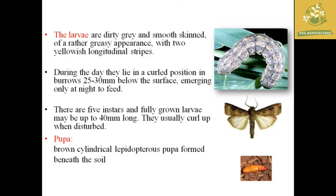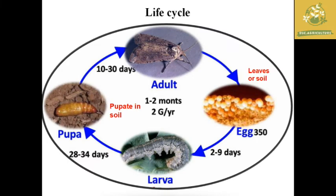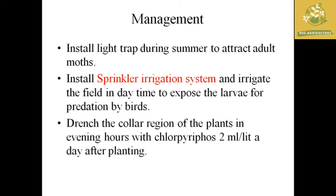The larva is dark beige and smoothly skinned with yellowish longitudinal stripes. The pupa is a lepidopterous, brown cylindrical pupa found beneath the soil. The adult is a heavily bodied moth with a sooty black appearance, and a wingspan of around 4.5 centimeters (45 millimeters). For management of cutworms: install light traps during summer to attract adult moths, use sprinkler irrigation during daylight to expose larvae to predators like birds, and drench the collar region of the plant in evening hours with Chlorpyrifos at 2 ml per liter.